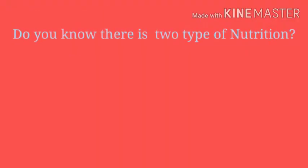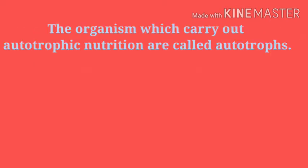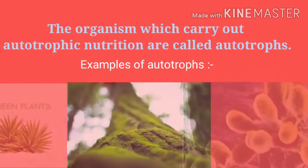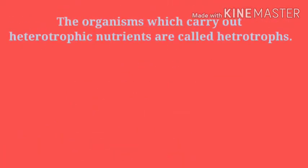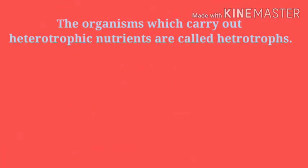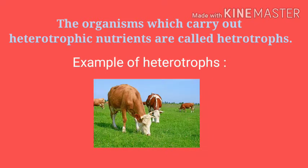There are two types of nutrition. The first one is autotrophic nutrition and the second one is heterotrophic nutrition. Organisms which carry out autotrophic nutrition are called autotrophs. Examples of autotrophs are green plants, some bacteria, and algae. Organisms which carry out heterotrophic nutrition are called heterotrophs. Examples of heterotrophs are animals.